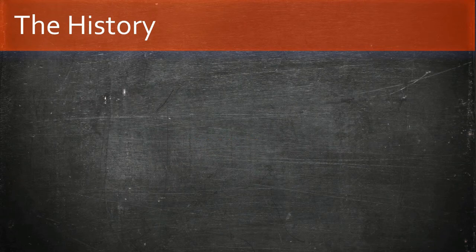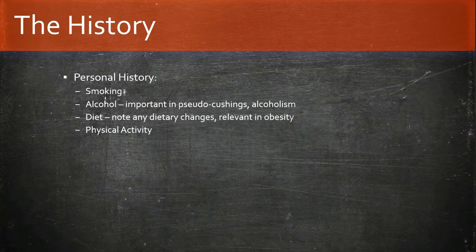Ask about personal activities such as smoking and alcohol — important, as chronic users may have a Cushingoid appearance. Also ask about diet, physical activity, and social history including job and accommodation.